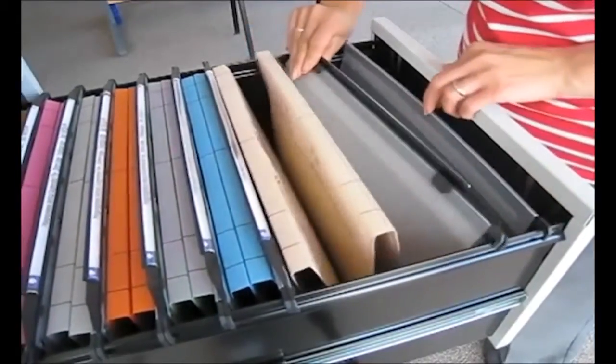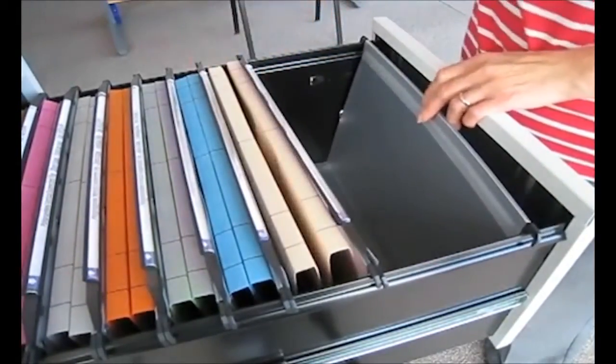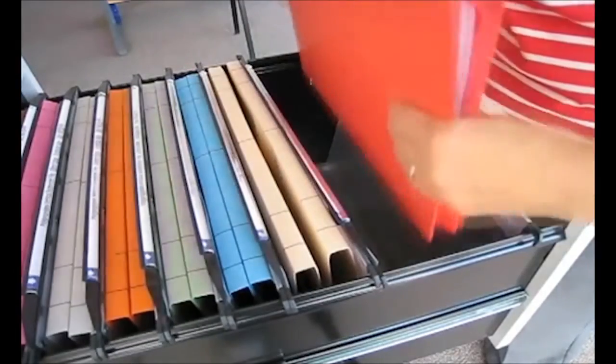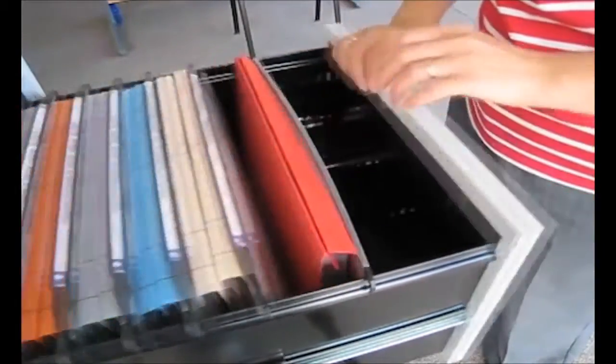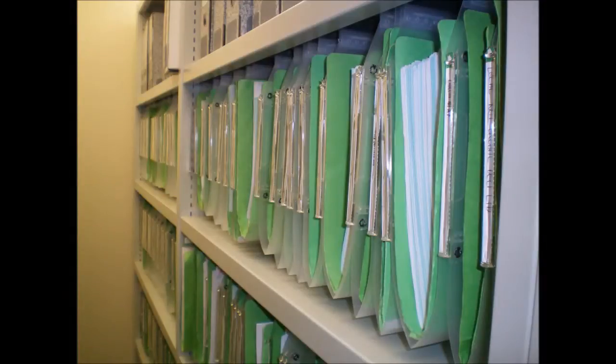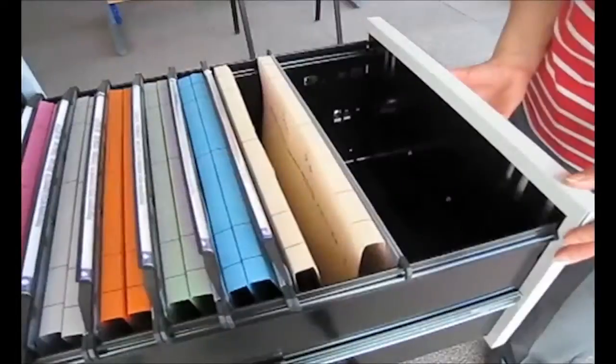Suspension or hanging files can be used to store large numbers of smaller files to create effect. The two types of suspension file you will come across are lateral suspension and vertical suspension files. Lateral systems see the suspension files placed onto rails, while vertical are placed into drawers of a filing cabinet.